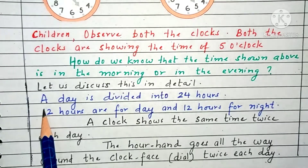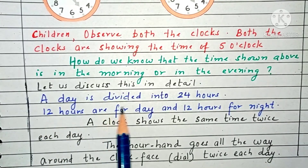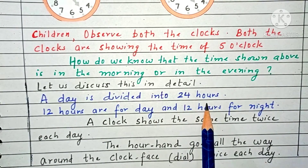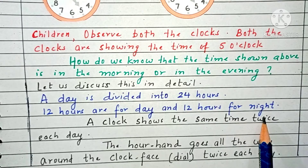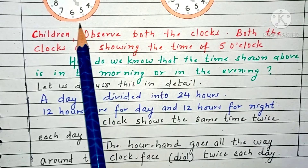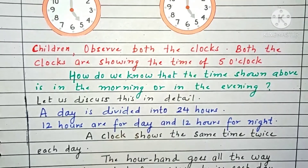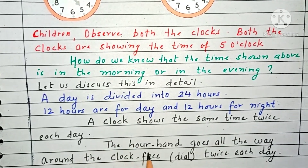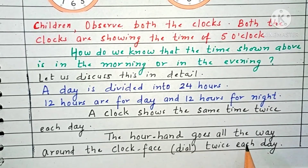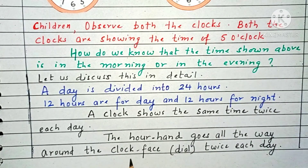A day is divided into 24 hours. 12 hours are for day and 12 hours for night. A clock shows the same time twice each day. The hour hand goes all the way around the clock face, which is the dial, twice each day.